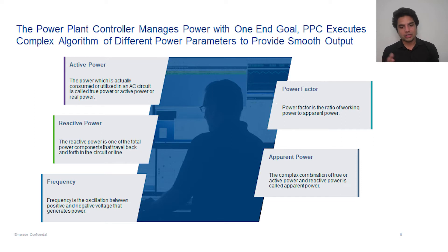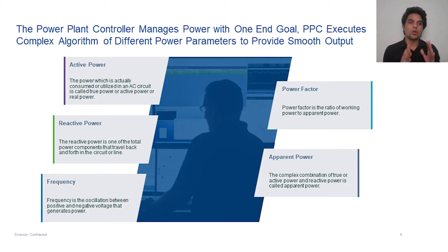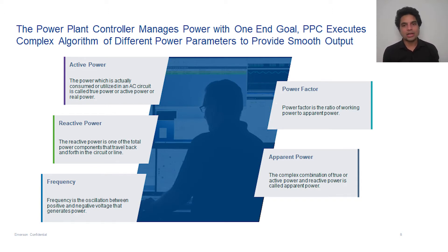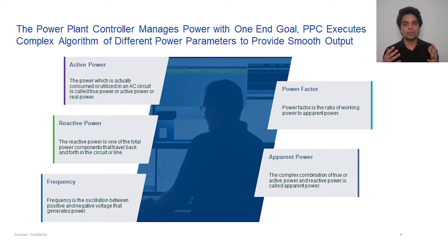Then power factor — power factor is nothing but a ratio of active power to apparent power. The more the active power, the better the power factor. And then apparent power, as the name implies, is the power which is apparent — it's a complex combination of active power and reactive power.